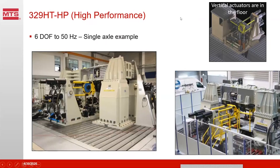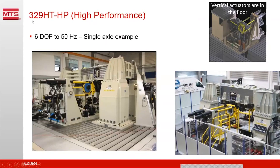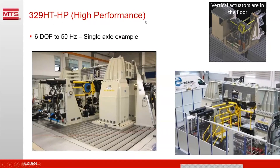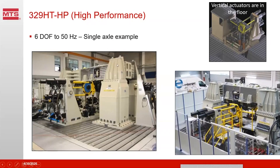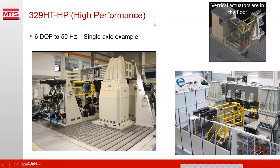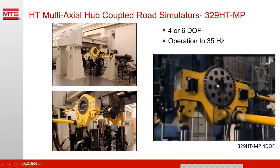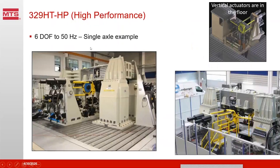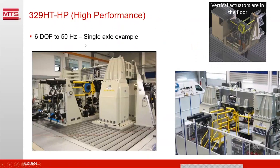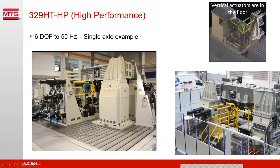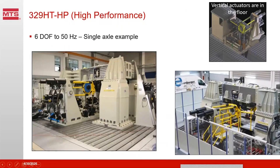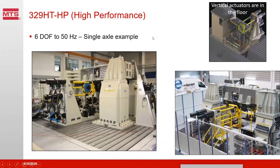This is a six degree of freedom tester we call the 339HTHP, or high performance tester — it does six degrees of freedom to 50 Hz. If you compare these two systems, notice the reaction frame for the 35 Hz system is not so heavy duty. Getting up to 50 Hz requires upgrading the entire reaction frame, not just the actuators. The whole system has to get beefier as we raise operating frequencies, which is another significant cost hit. We don't want any resonances in the frame within the operating frequency range.